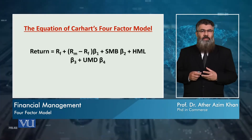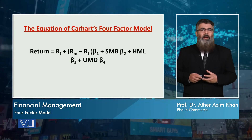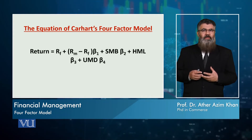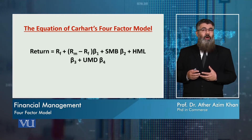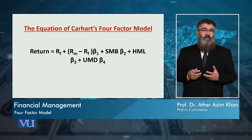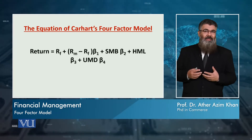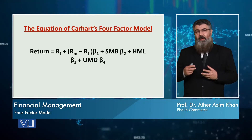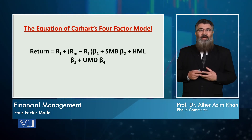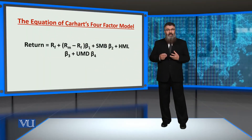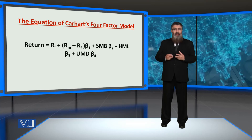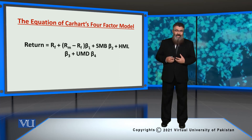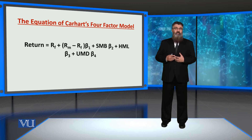In conclusion, when Fama and French introduced two additional variables — size and value — we got a better explanation of return than CAPM alone. Those two variables combined with the market risk factor explained investor returns more effectively. When Carhart's fourth factor, momentum, was added, it provided an even better explanation. Therefore, Carhart's four-factor model explains investor returns better than the Fama and French three-factor model.